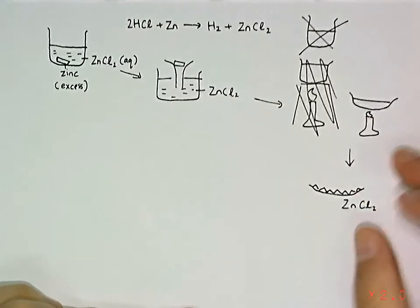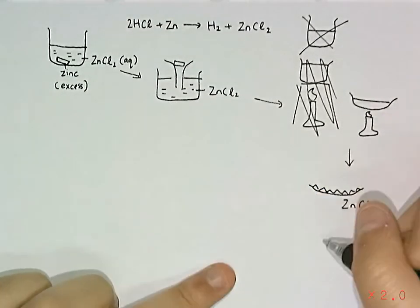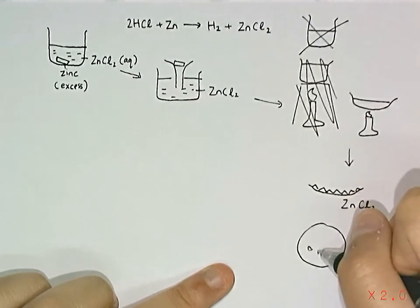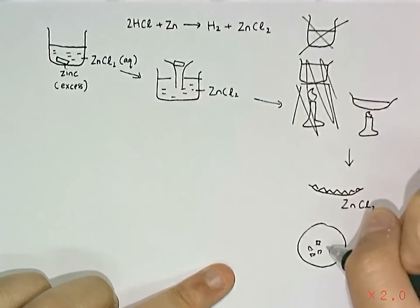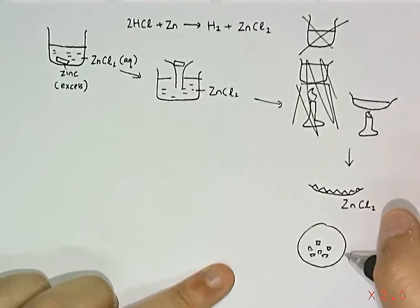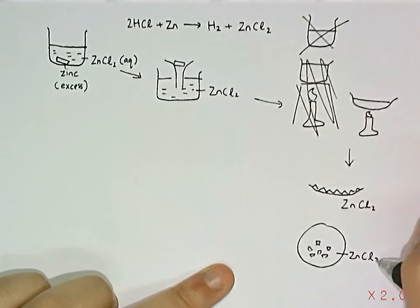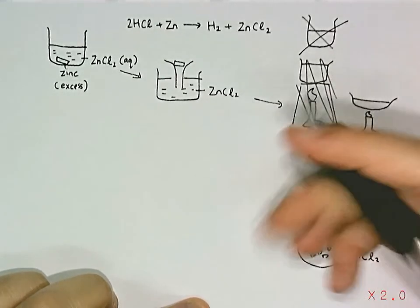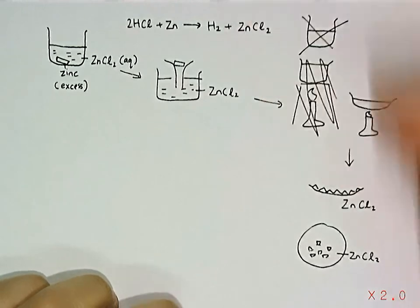To dry them, I just have to dry them in between filter paper. Then I will get dry, pure salt crystals of zinc chloride. That's how you obtain zinc chloride with the method of adding acid to metal. Thank you.